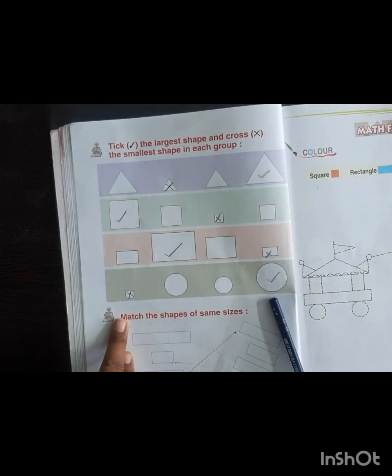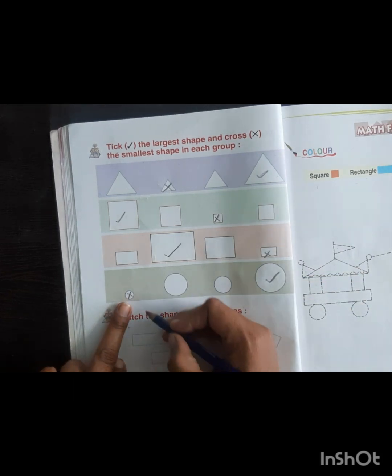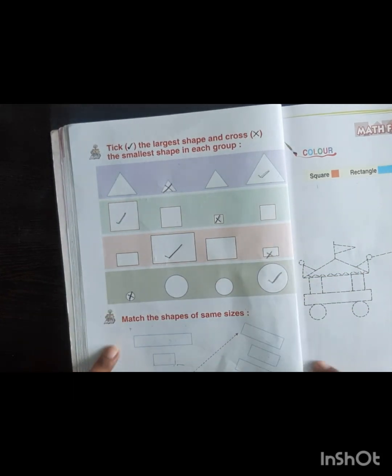There are four circles, so largest circle, we tick it. And the smallest circle, we cross it.